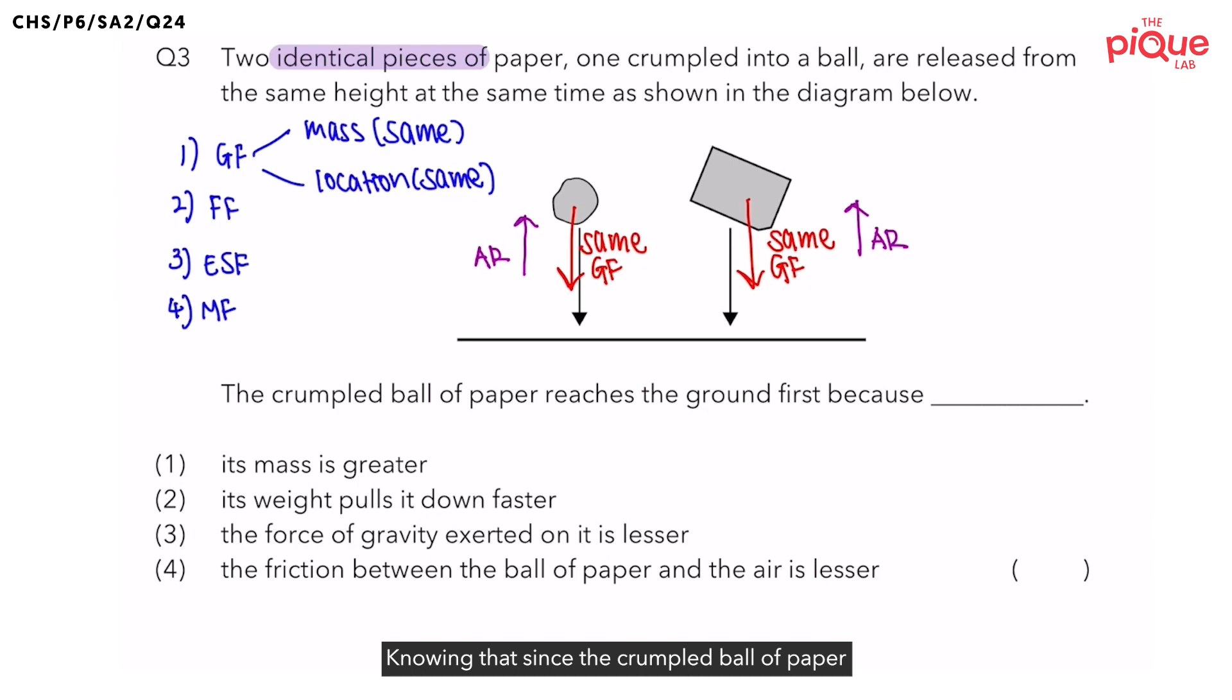Knowing that, since the crumpled ball of paper has a smaller exposed surface area, would there be more or less air resistance acting on the crumpled ball of paper? There would be less air resistance acting upwards on the crumpled ball of paper, allowing it to fall faster and reach the ground first. Now, let us look at the options.